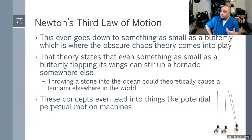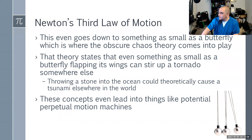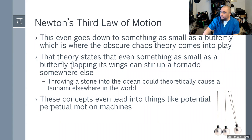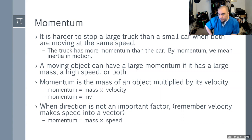The butterfly effect theory says that even something as small as a butterfly flapping its wings can start a tornado or tsunami somewhere else. Throwing a stone in the ocean could theoretically cause a tsunami. These concepts lead into potential perpetual motion machines — like those Newton's cradle devices where steel balls swing back and forth. If there were no friction, that machine would keep going forever. But there is friction.